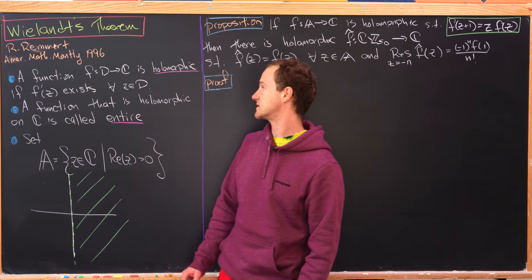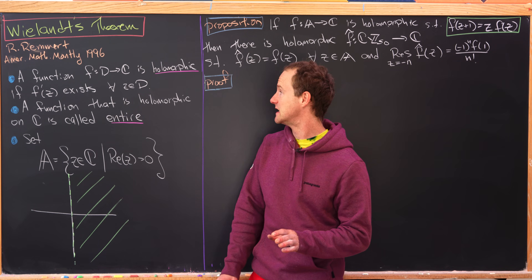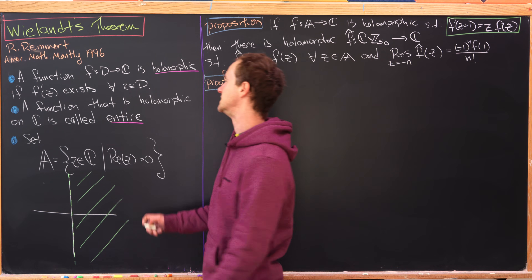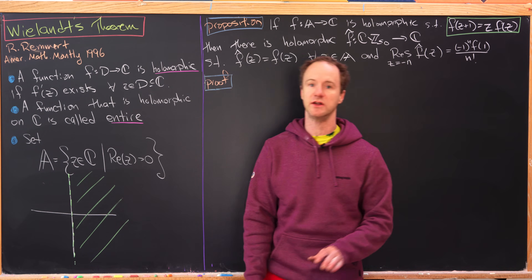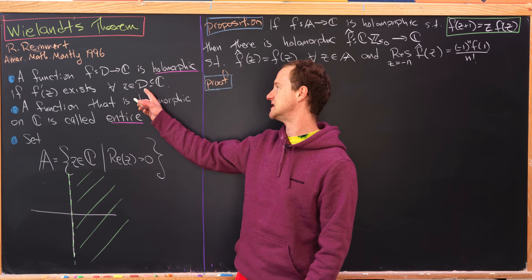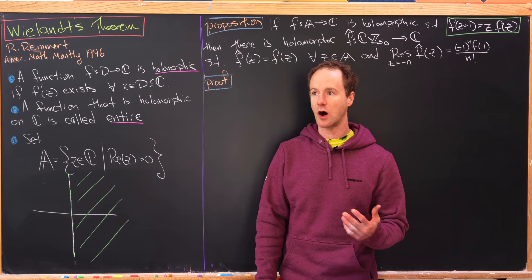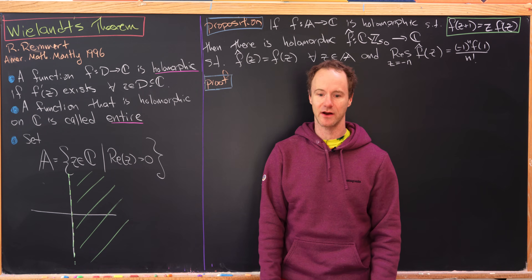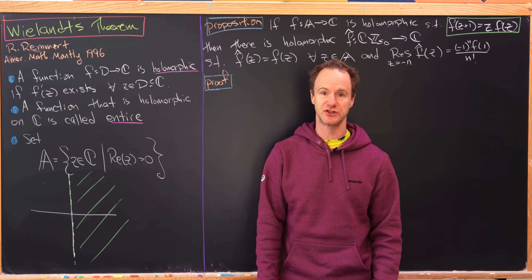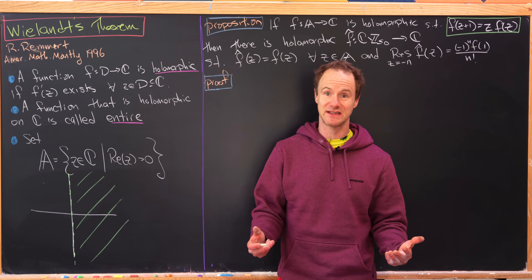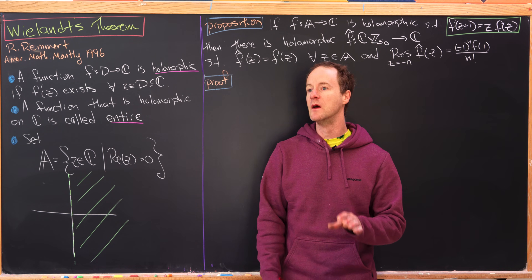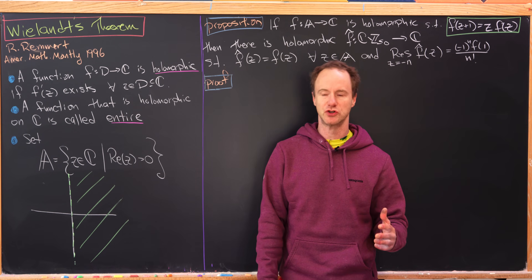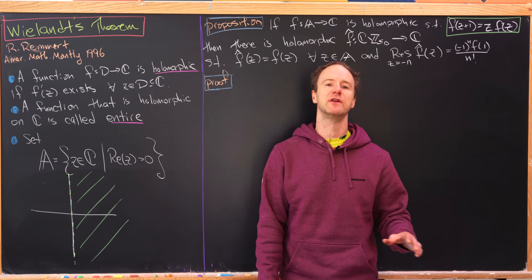First we need a couple of definitions. We say a function f from D to C is holomorphic if the complex derivative of f exists for all z inside of D — holomorphic on a domain D, where D is a subset of the complex numbers. If D is all complex numbers, in other words it's holomorphic on the entire complex plane, then this function is called entire. In the real numbers, differentiability doesn't mean the second derivative exists and doesn't give you a ton of power. But in the complex world, complex differentiation is a very powerful tool — I did a previous video on that if you'd like to check it out.